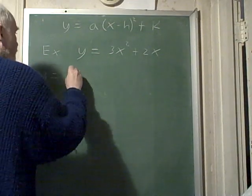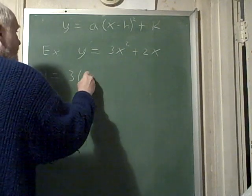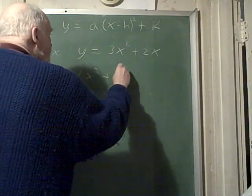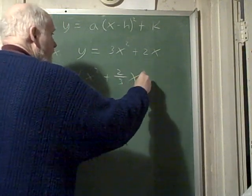y and factor a 3 out, dividing 3 into that term and that term. When I do that I'll get x squared plus 2 thirds x. I want to add a